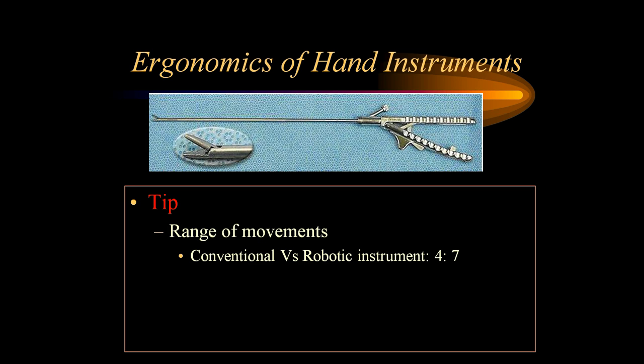When it comes to the ergonomics of hand instruments, we should understand three important aspects. The range of movements at the tip is limited in conventional instruments compared to robotic instruments. Conventional instruments only have four different movements — up and down, right and left — whereas robotic instruments are like a wrist and can have seven different movements.